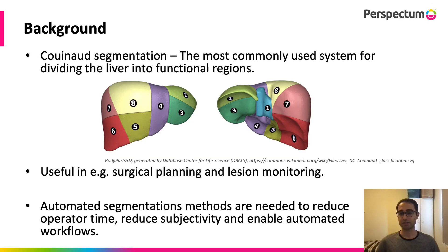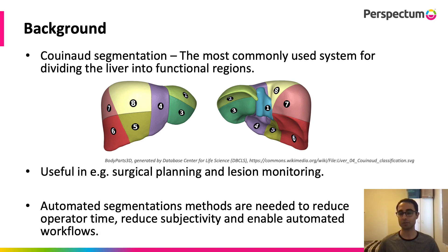Couinaud segmentation is a system for dividing the liver into eight functional regions based on the vasculature. You can see anterior and posterior views of how you would split the liver using this system, and segment four is actually split into four A and four B as well. It's very useful for applications such as surgical planning and lesion monitoring, and automated methods are needed to reduce manual segmentation time, reduce subjectivity, and enable automated workflows.